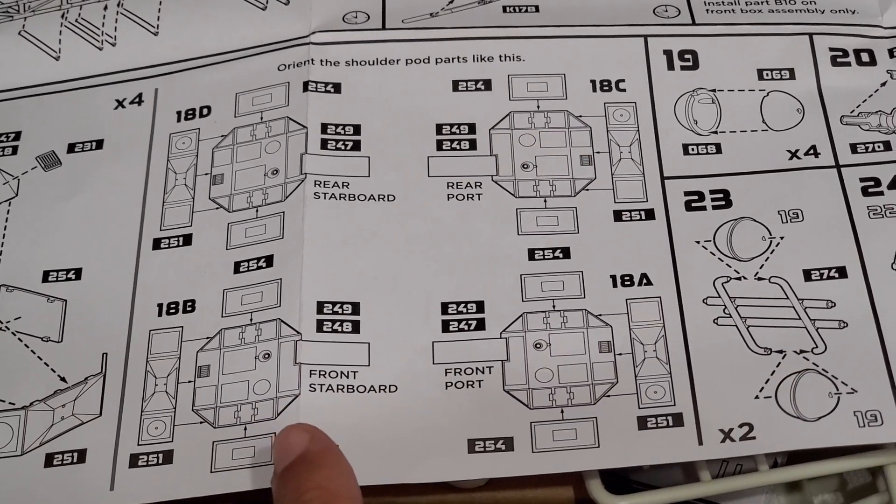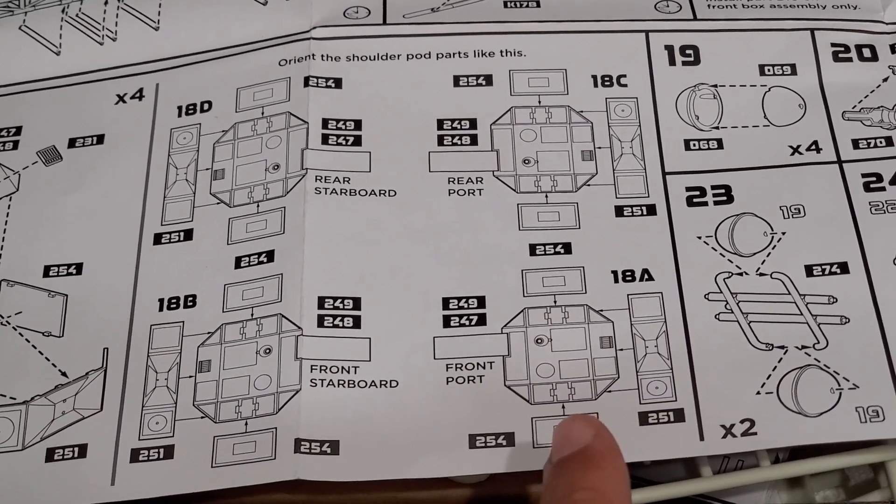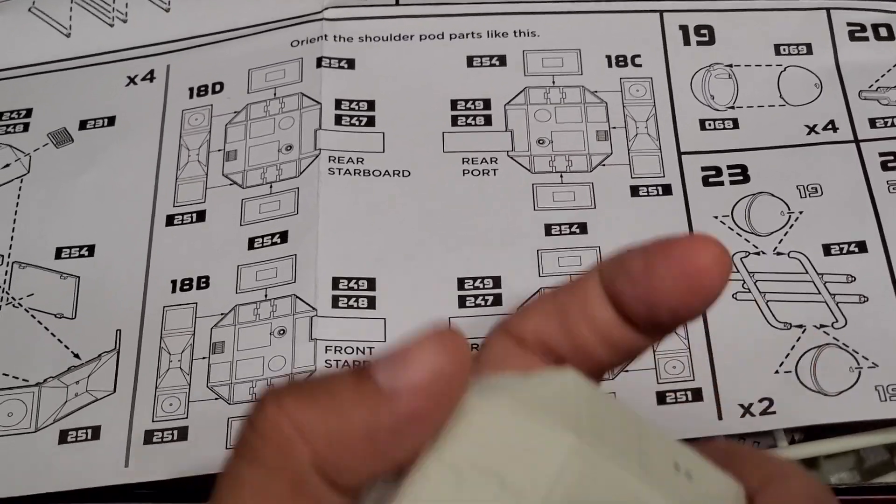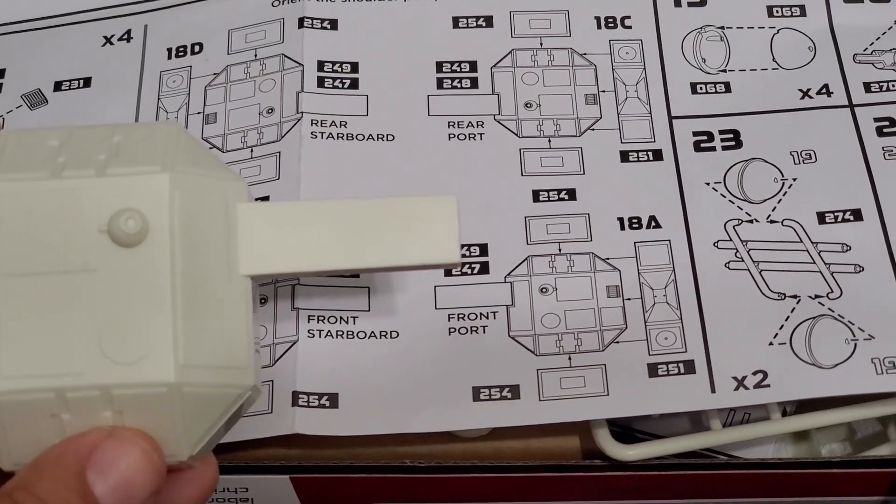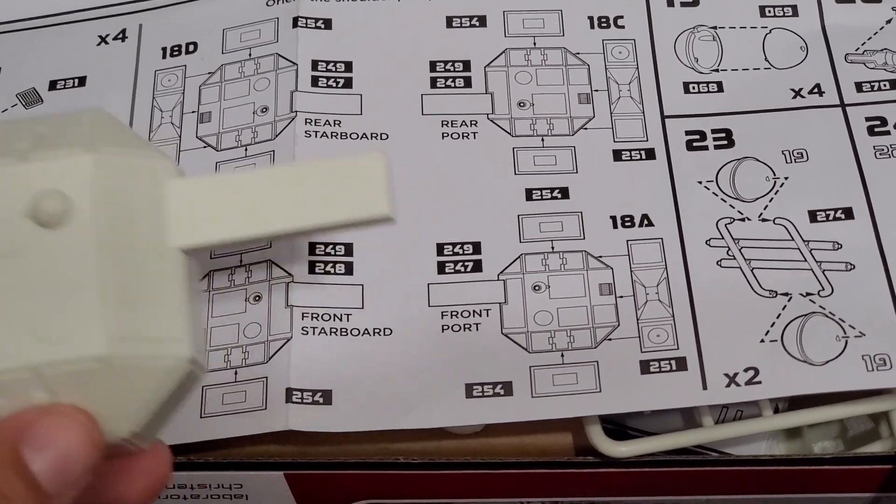This is front starboard and front port. The Eagle's facing you at this point - the castle's here, the engines are back there. So if this is your front starboard, I decided to build my front starboard first.